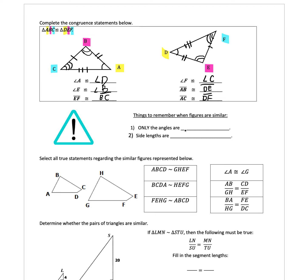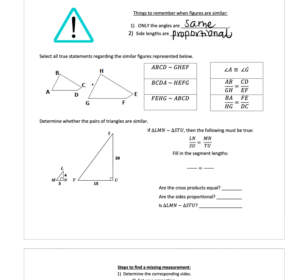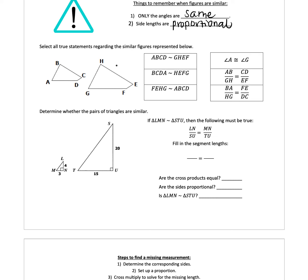Before moving on: when you have similar shapes, only the angles will be the same — the sides will just be proportional. In the previous example the shapes were congruent so everything had the same measure, but for similar shapes they look similar but are different sizes. In the next example we have two similar quadrilaterals and we want to figure out which statements are true. Color-coding helps — angle A looks like it corresponds to angle G since the shapes are drawn in the same direction.